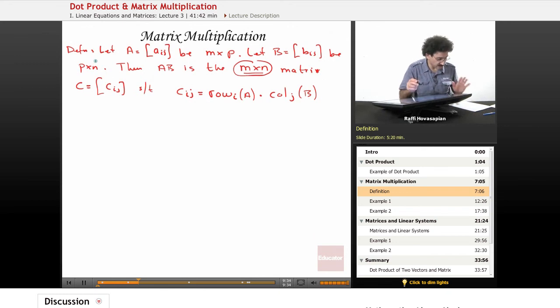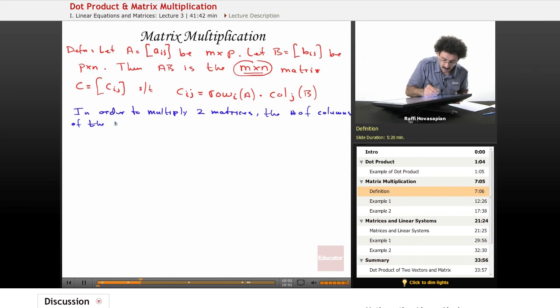So in order to multiply two matrices, let's write this one out specifically. In order to multiply two matrices, the number of columns of the first must equal the number of rows of the second. And that's what this says. M by P, P by N. The number of columns of the first has to equal the number of rows.